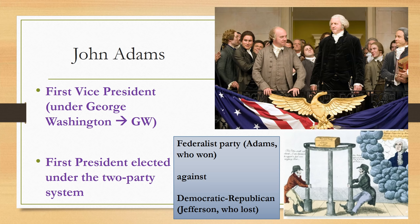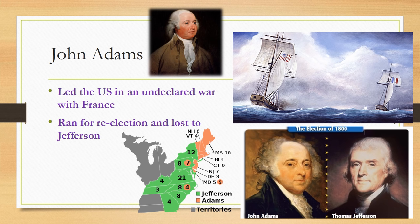The Federalist Party was represented by John Adams in this election, and the Democratic-Republican Party was represented by Thomas Jefferson. Adams won in 1797. John Adams then led the US in an undeclared war with France, and when he ran for re-election four years later, he lost to Thomas Jefferson. You can see the party issues being debated in the election of 1800, and from the map you can see who voted for Jefferson statewise and who voted for Adams.